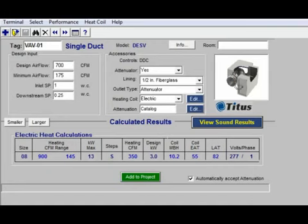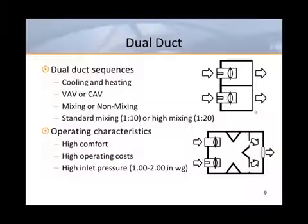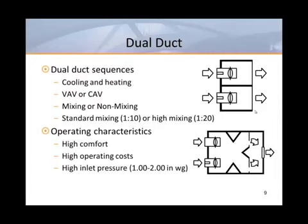Now that we've looked at a single duct selection, let's look at dual duct boxes. Dual duct boxes are usually found in university buildings, hospitals, and university hospitals. These units are supplied with hot and cold air and can be used in non-mixing or mixing applications. They can also provide variable volume or constant volume air flow to the spaces they serve.